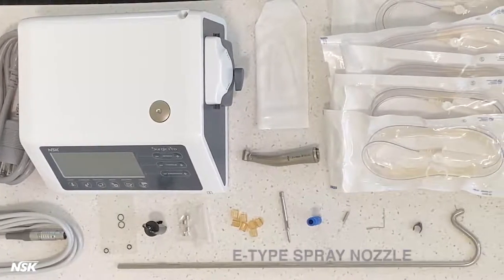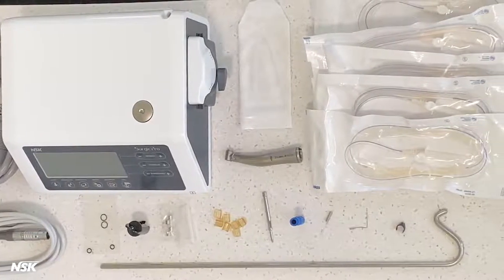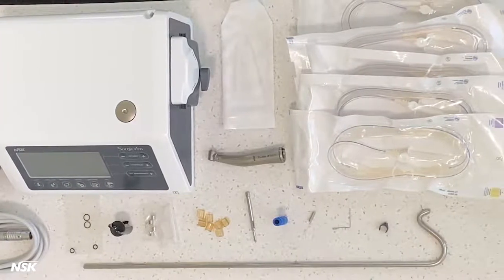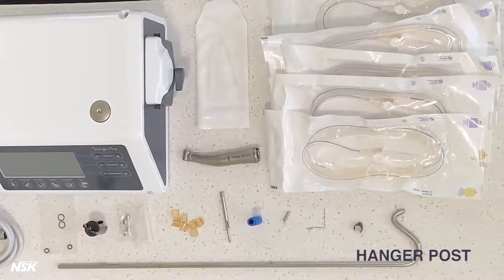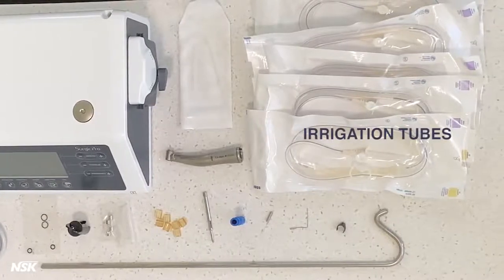Additional items include E-type spray nozzle, cleaning wire, internal spray nozzle, nozzle holder, coolant solution hanger post, and irrigation tubes.